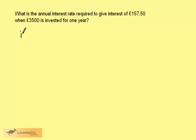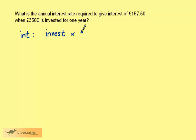Let's look at the calculation. The interest would be given by the calculation: the original investment multiplied by the percentage, which we usually express as a decimal, and that would give us the amount of interest.